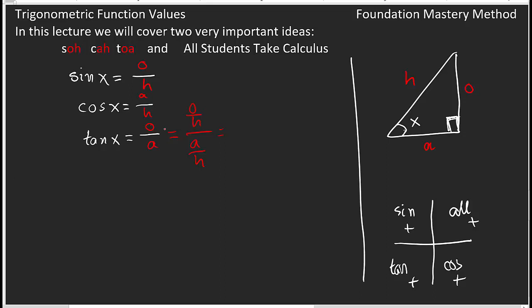You can see that tangent X equals O over A, because if you divide O by H and A by H, algebraically that gives O over A. So O over H is sine X, and A over H is cosine X. Therefore, tangent X is the ratio of sine X to cosine X, for the same interior angle.